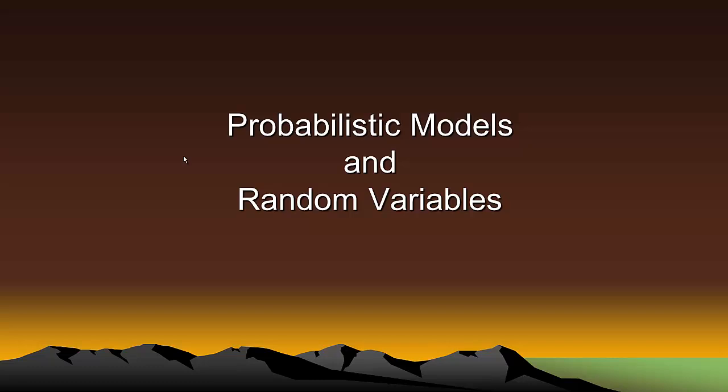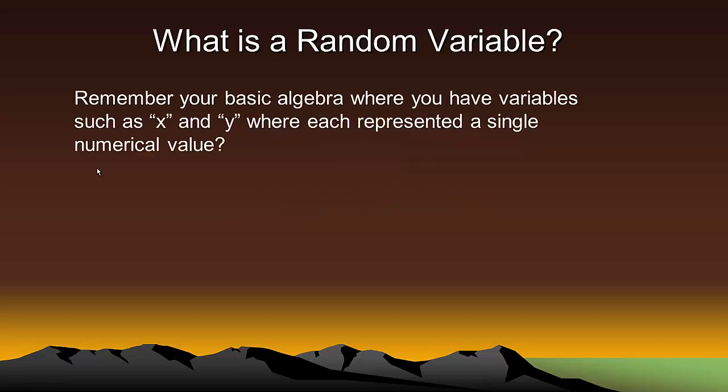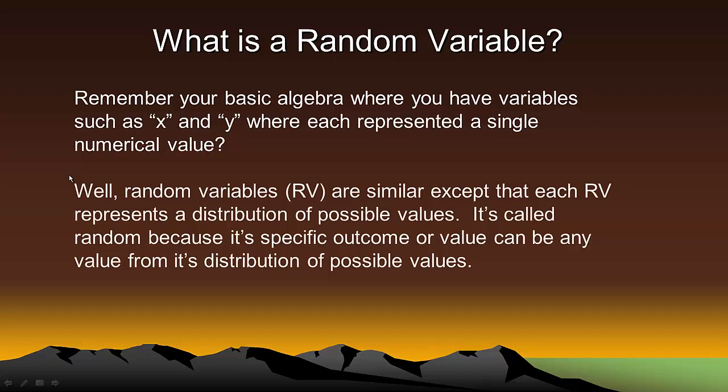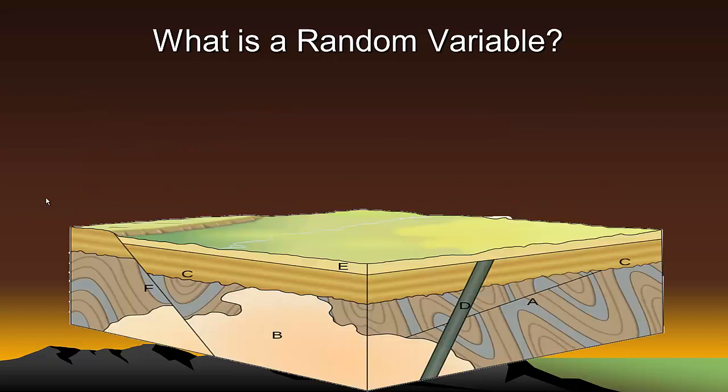In fact, it's the probabilistic models and random variables in particular that are the cornerstone of geostatistics. And so the next few slides are all about random variables, just in case they are something you're not too familiar with. So you can ask, what is a random variable? Remember your basic algebra where you had variables such as x and y and where each represented a single numerical value. Well, random variables are similar, except that each random variable represents a distribution of possible values. It's called random because its specific outcome or value can be any value from its distribution of possible values according to some probability law.